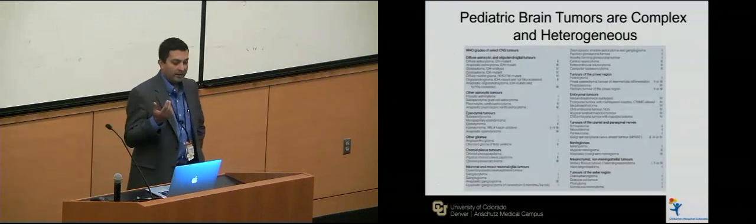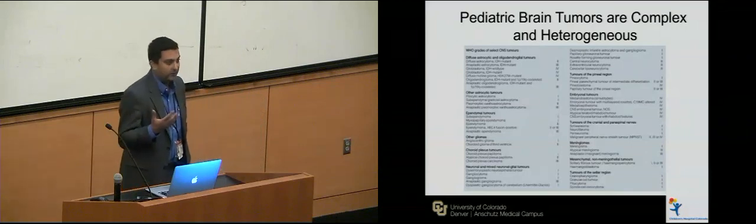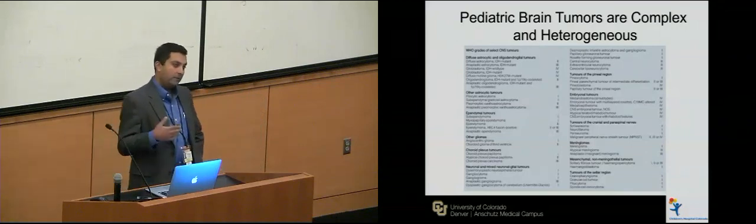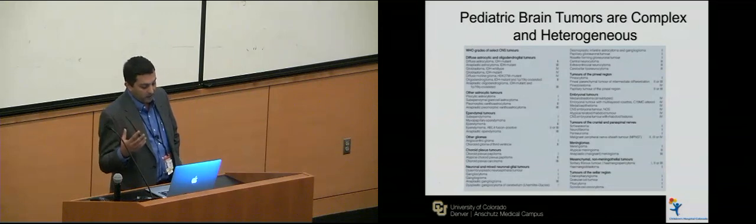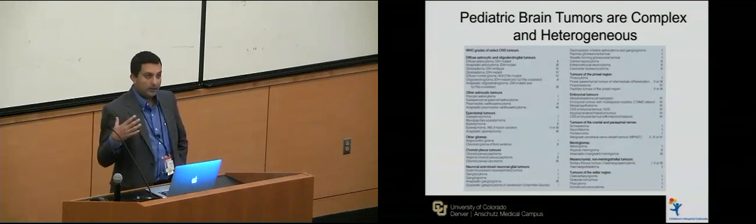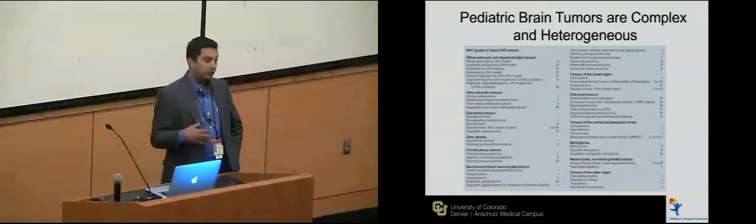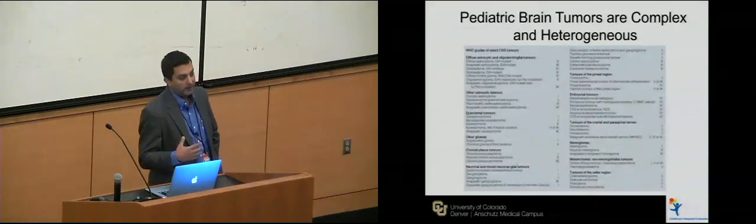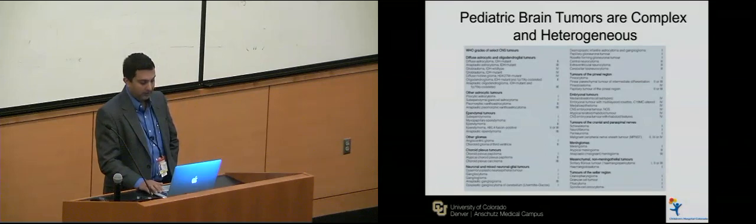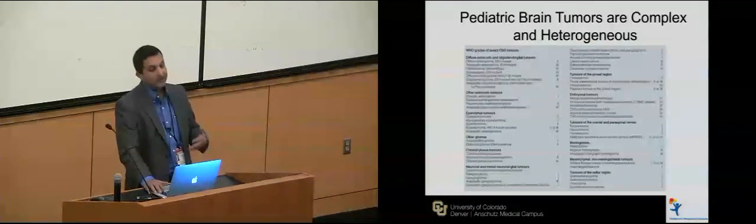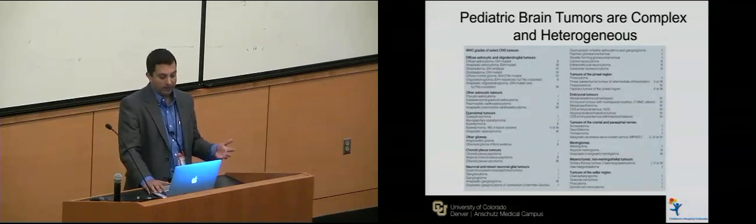One of the things about pediatric brain tumors is that they're pretty complex. From the 2016 WHO update on classification of brain tumors, you can see they've classified them in multiple, multiple different ways. The 2016 update now includes specific molecular definitions of tumors, so it's not purely based on histology alone anymore. That's really helped us think about how we chase these tumors, but it also makes it more difficult because you have this large heterogeneous group.